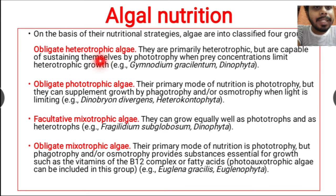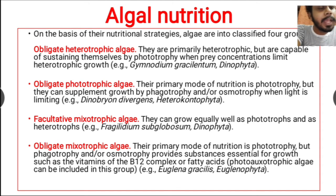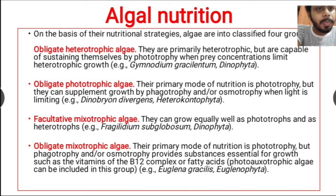Obligate heterotrophic algae are primarily heterotrophic, but are capable of sustaining themselves by phototropy when prey concentration limits heterotrophic growth. That means when heterotrophic conditions are limited, they can sustain themselves by phototropy. Heterotrophic means they cannot perform photosynthesis or produce their own food, and obligate means completely heterotrophic.